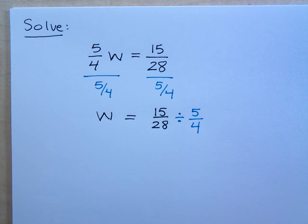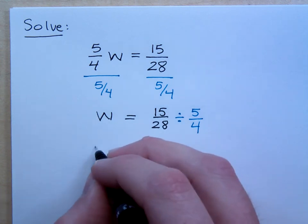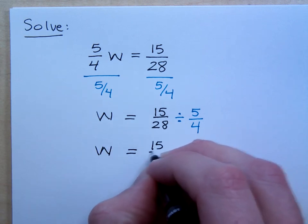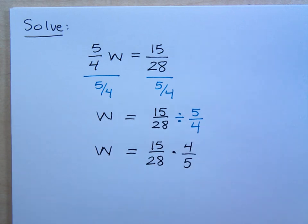But you already know what to do when you divide by a fraction. You have to do what? Keep, flip, change. Keep this guy, flip that guy, and then you change the operator from division to multiplication. So 15 over 28 times 4 over 5. Do you all agree with that?